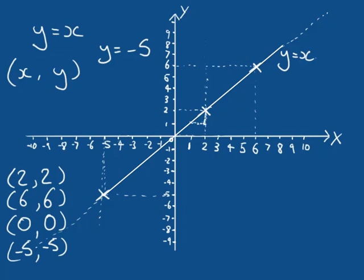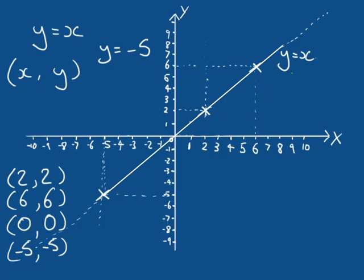We can see: if we were to move one unit in X, we move up one unit in Y. If we move two units in X, we move up two units in Y, because there is a direct relationship between X and Y. We can check this is the correct relationship by choosing another value in X, say X equals 4, and finding where on our line X equals 4 — the Y value should be 4 as well.